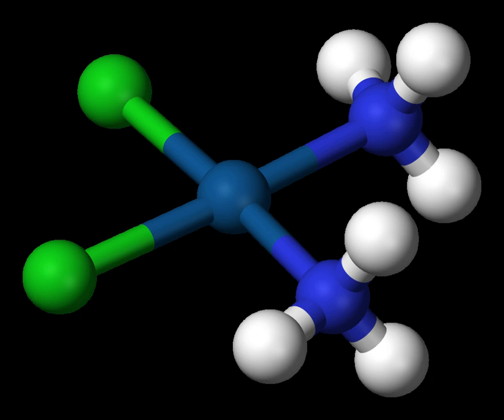A polydentate ligand is a molecule or ion that bonds to the central atom through several of the ligand's atoms. Ligands with 2, 3, 4 or even 6 bonds to the central atom are common. These complexes are called chelate complexes. The formation of such complexes is called chelation, complexation, and coordination.